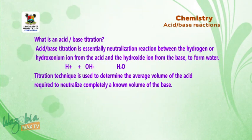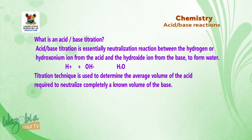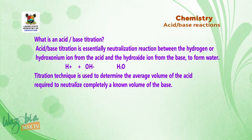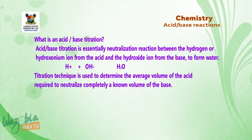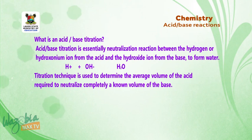What is an acid-base titration? Acid-base titration is essentially a neutralization reaction between the hydrogen or hydronium ion from the acid and the hydroxide ion from the base to form water. Titration technique is used to determine the average volume of the acid required to neutralize completely the known volume of the base.